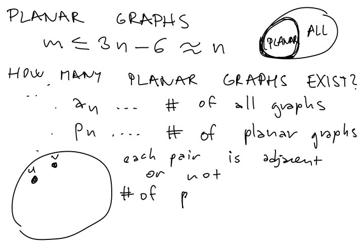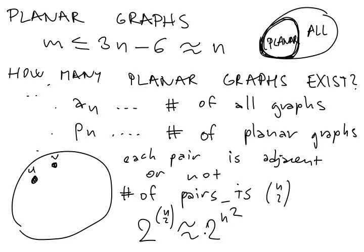And number of pairs is n choose 2. So for each pair we can choose whether there will be an edge or not. So for each pair we have two possibilities. So we have 2 to the n choose 2 different graphs, which is roughly 2 to the n squared. Now we are going to use just this bound and this will be enough for us. So this is some kind of good bound for this value an here.